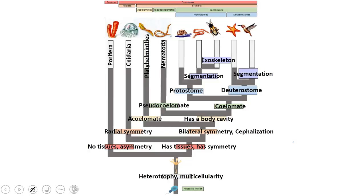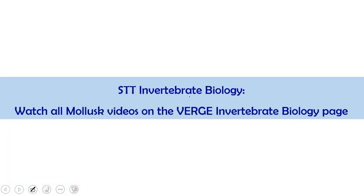On our cladogram, mollusks are this branch right here. You can see they are different from our previous nematodes and platyhelminthes because they are coelamate, meaning they have a body cavity that is fluid-filled and tissue-lined. And they are different from the other branch because they are protostomes, meaning their mouth developed first instead of their anus. Now watch all those mollusk videos on the Verge invertebrate biology page, then come back for our annelid video.